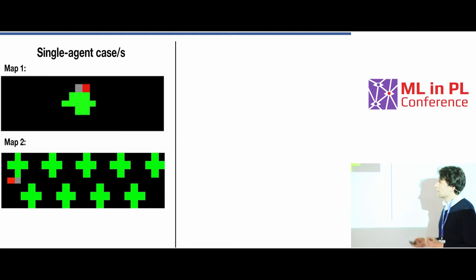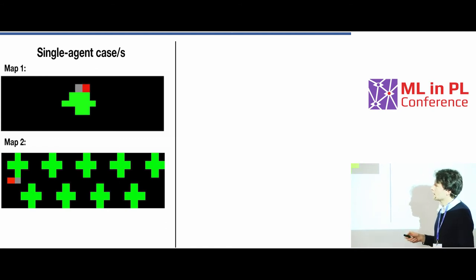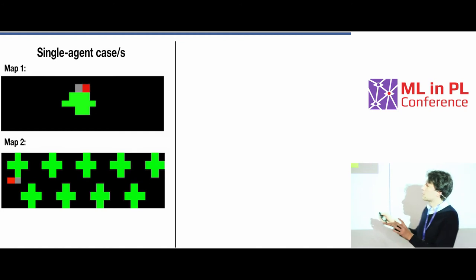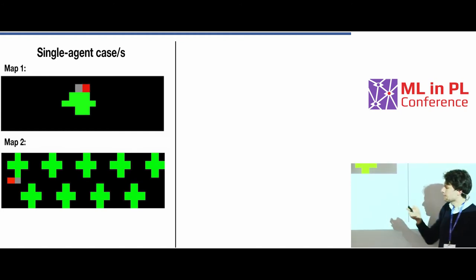And in both single-agent scenarios, in map one and map two, this was quite easy — they solved it quite quickly. You can see this is an optimal strategy where the agent just goes around and collects apples all the time.